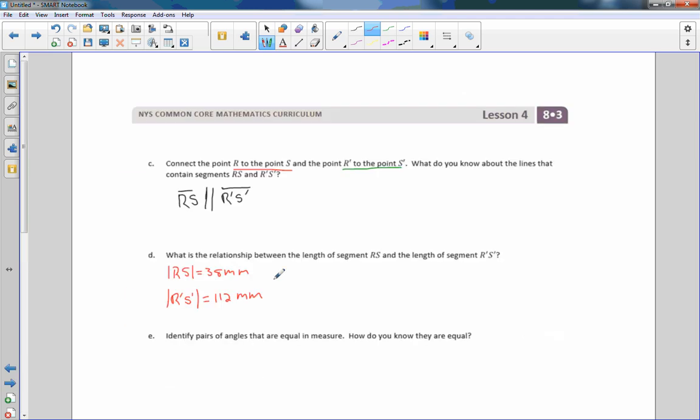Now it's saying, what is the relationship between these lengths? Well, if I compare 38 and 112, a relationship is written as a ratio. I'm comparing two values. If I reduce that, 38 divided by 2 is 19. And 112 divided by 2 is 56. 19 is prime. I can't reduce any further. But 19 times 4.